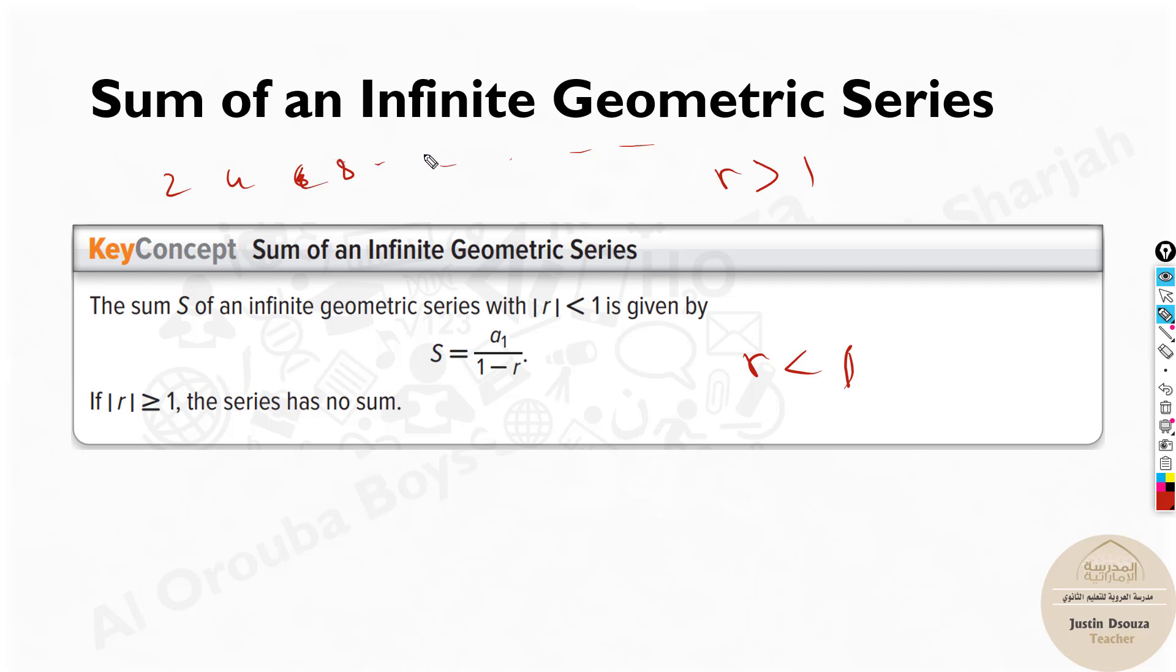So now imagine you have 2, 4, 8, 16. It keeps on increasing. You're multiplying. r is something more, it becomes multiplication and keeps on going till infinity. You can't track it down. You can't find its sum. Whereas if it goes less, say 0.5, 0.25, 0.125, then you can add all the sums. So we will look into the problems here.